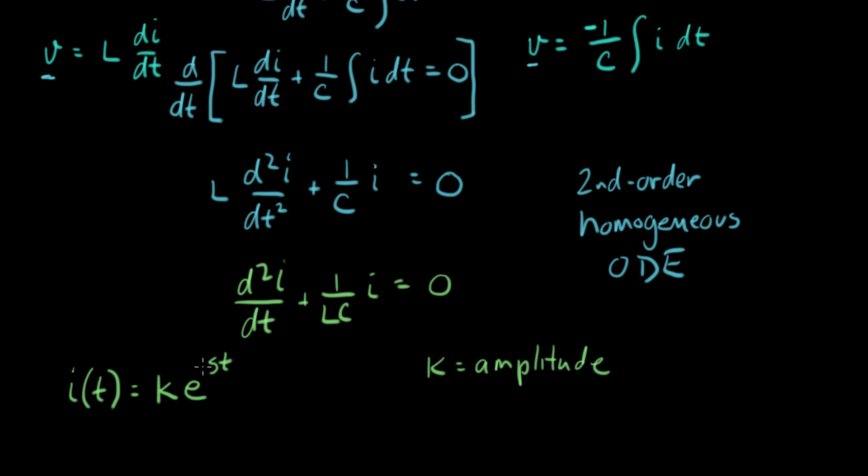We know that by the time we take an exponent of anything, that whatever's up here has to have no units. So that means that s times t has no units, and that means that s has units of one over time, so s is a frequency of some sort. In particular, it's going to be a radian frequency in radians per second. So s is going to be called the natural frequency.